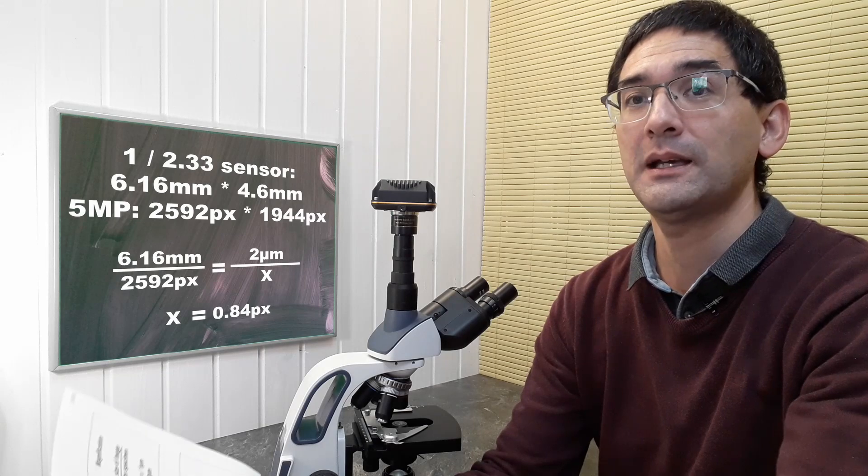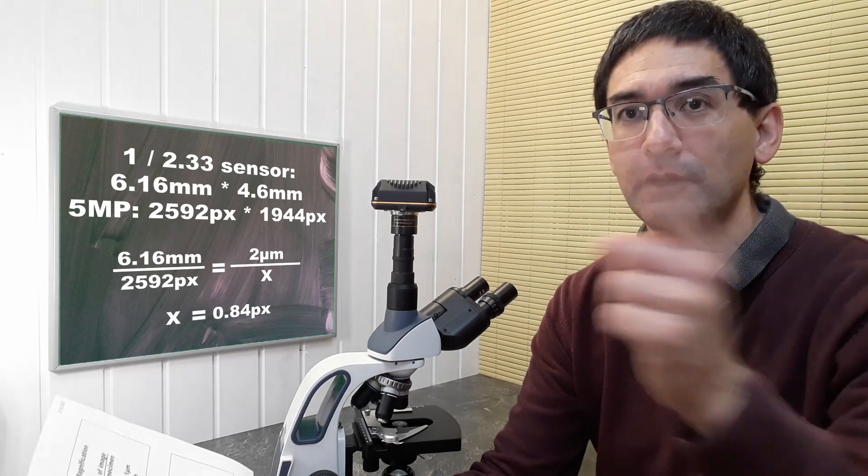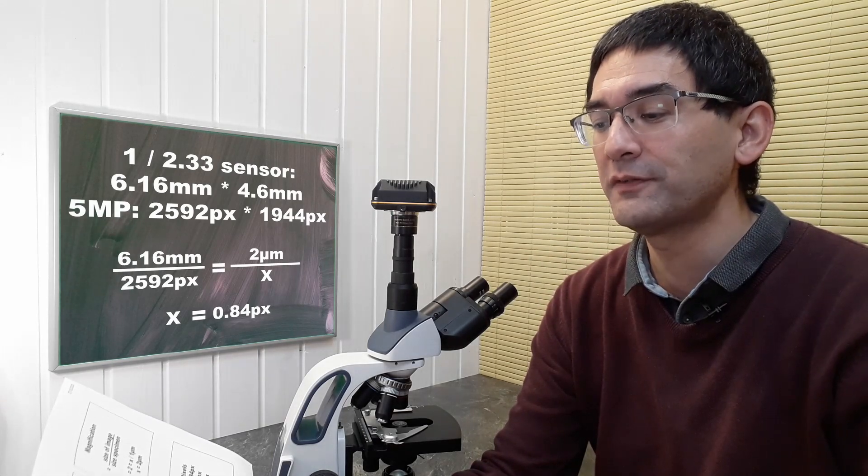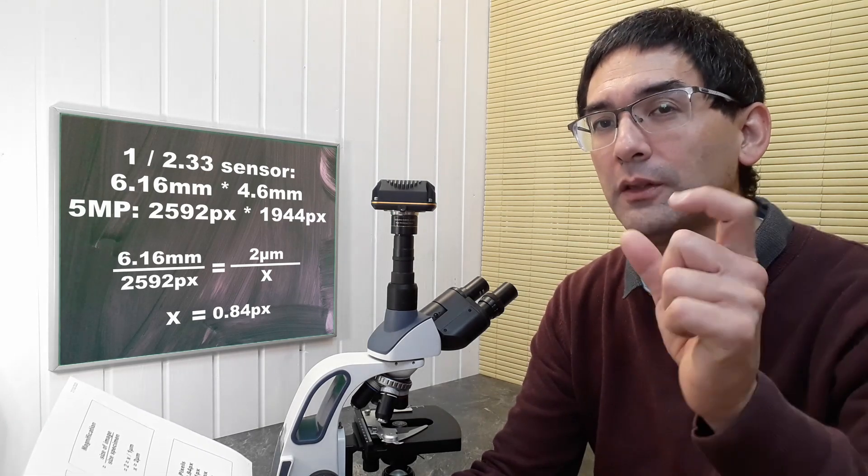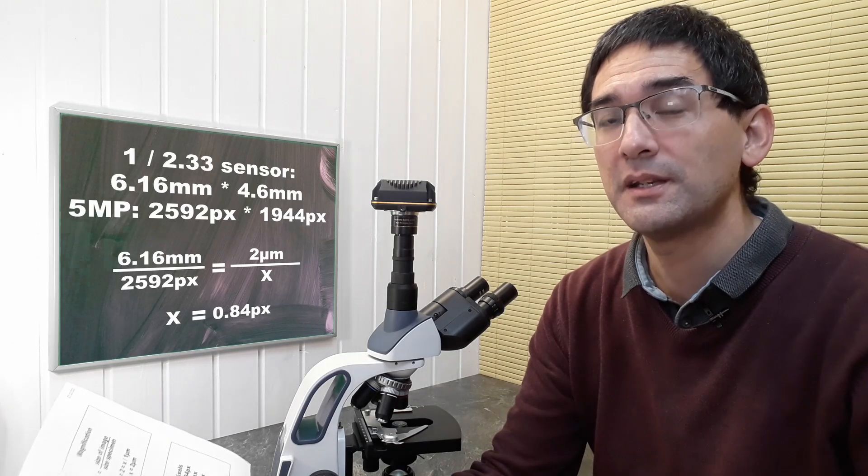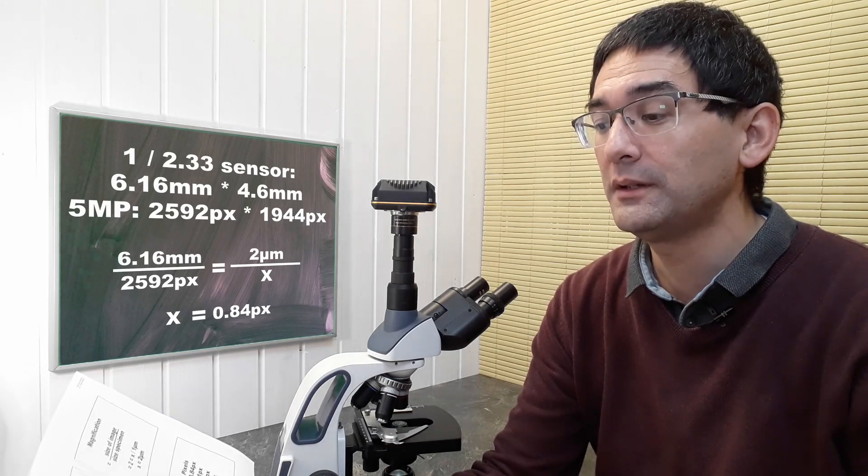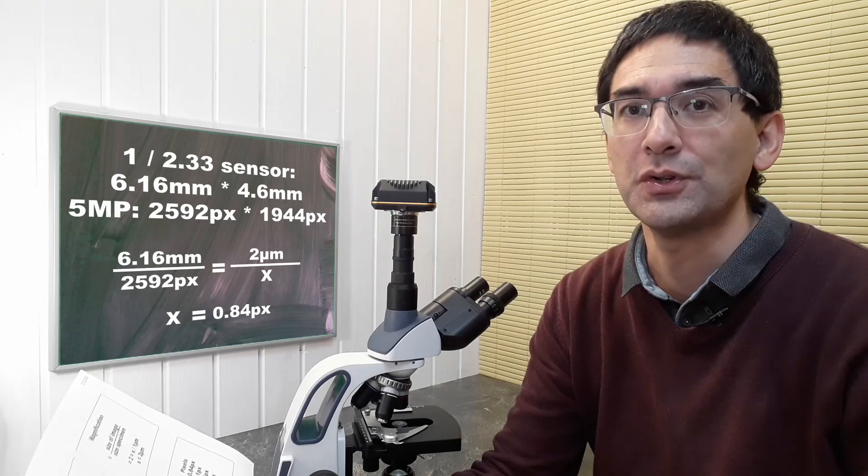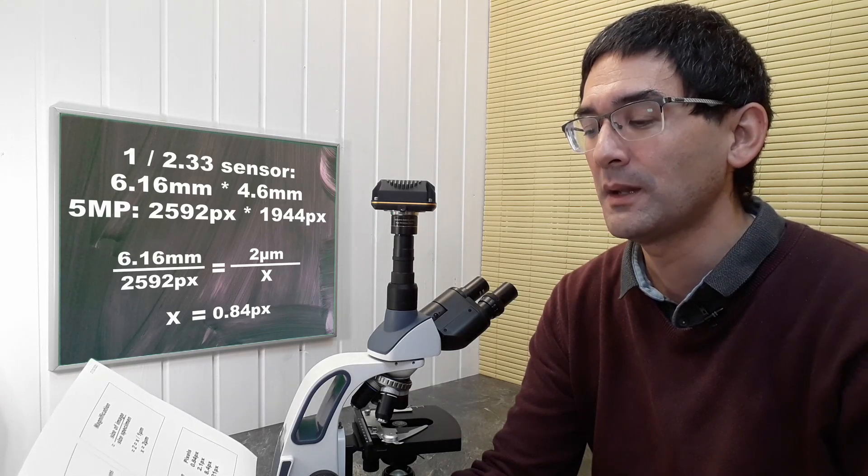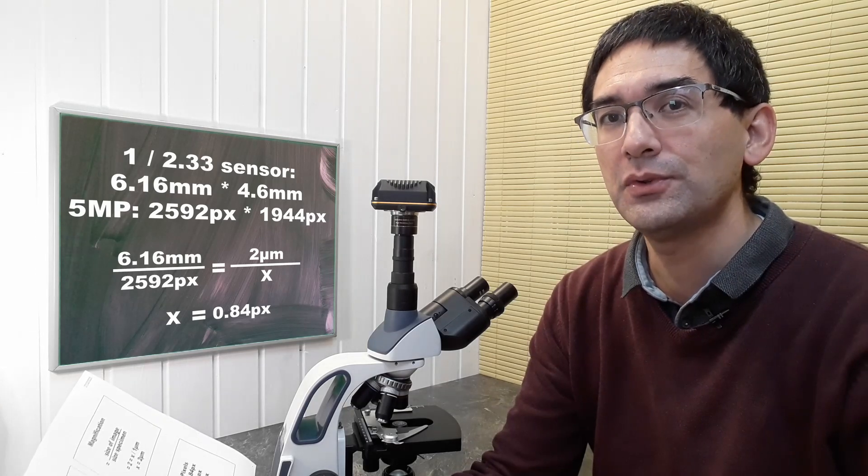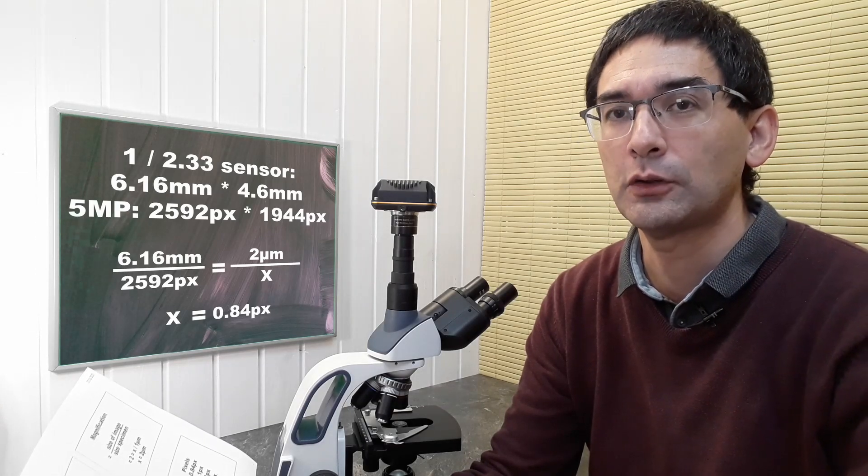A 5 megapixel camera would have a resolution of 2,592 pixels. I did research: the width of this sensor would be 6.16 millimeters times 4.6 millimeters. With these values, we can now do a direct proportion calculation.